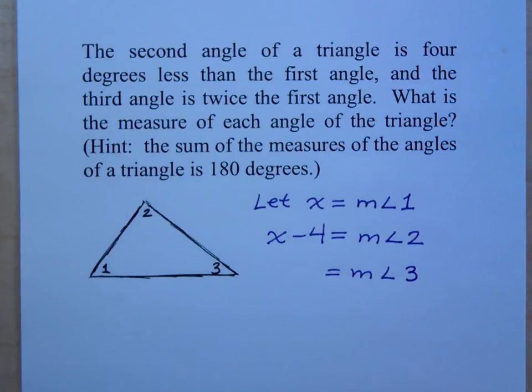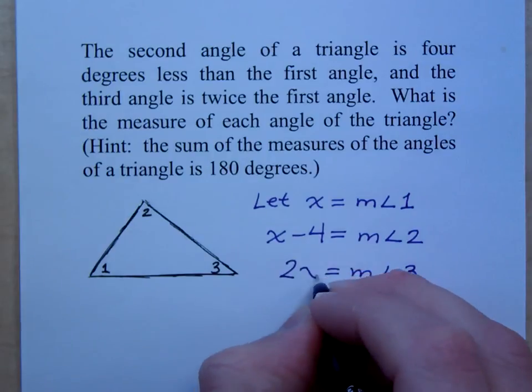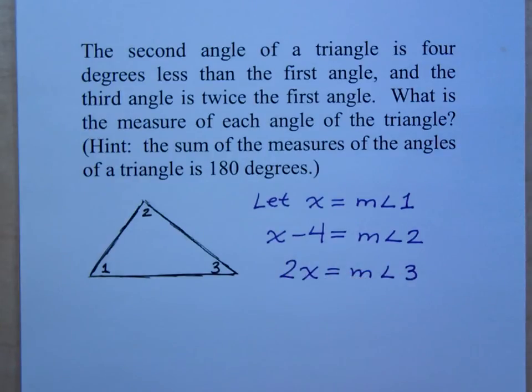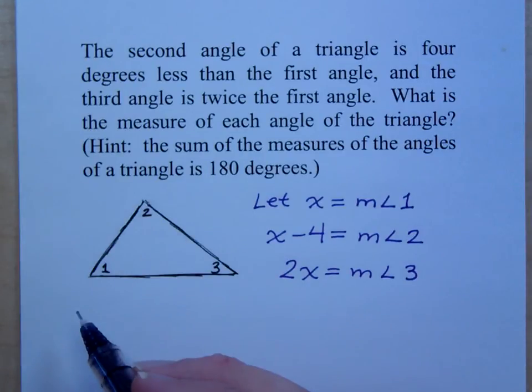And then for the third angle it says twice the first. How are you representing the first angle? X. So then how do you say twice that? Two x. You say two x, right? There is a total here. Now, I'm giving you the hint because we haven't really talked about this yet. But if you add up all of the angle measures in a triangle that's in a plane, it's 180 degrees.